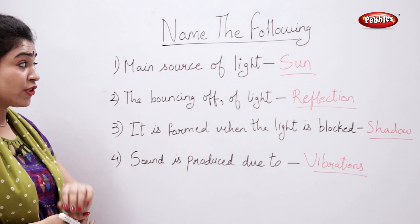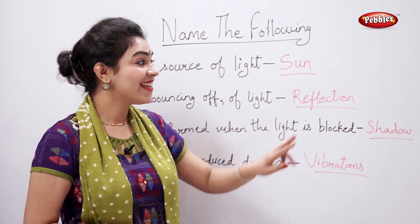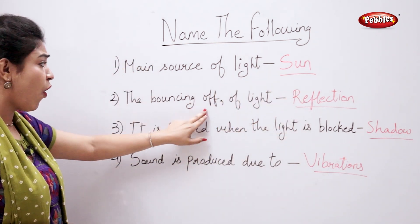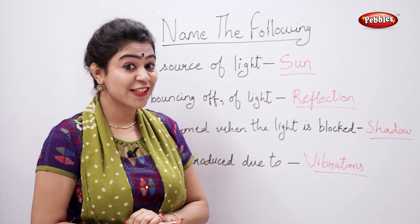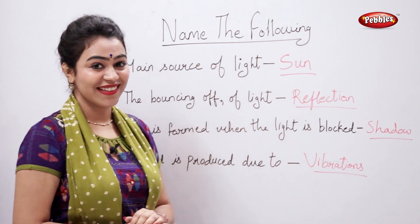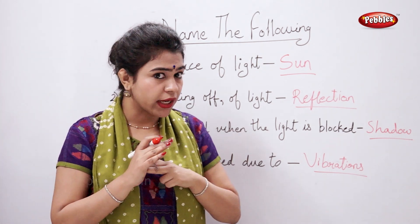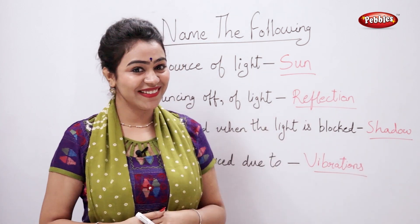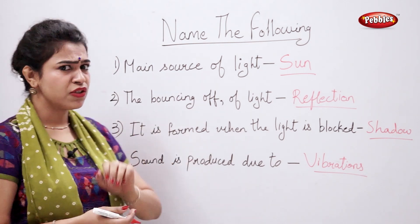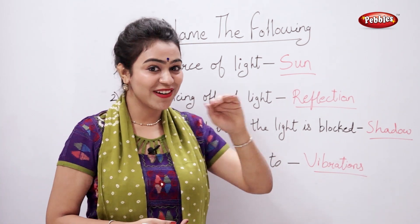The main source of light is Sun. The bouncing off of light is called reflection. It is formed when the light is blocked - that's shadow. Sound is produced due to vibrations.